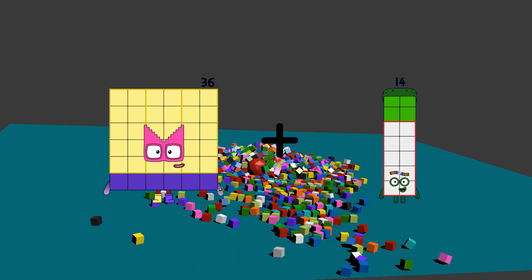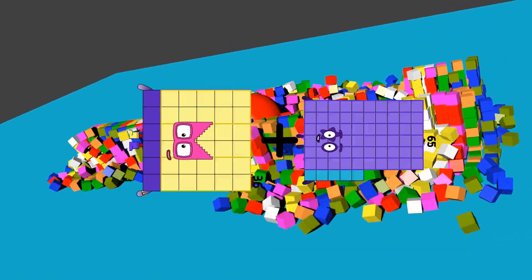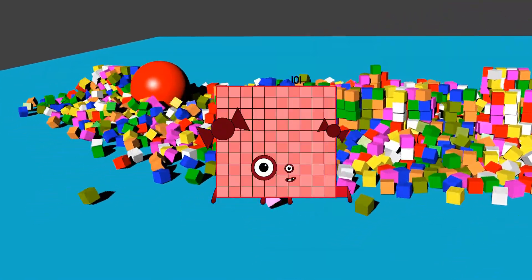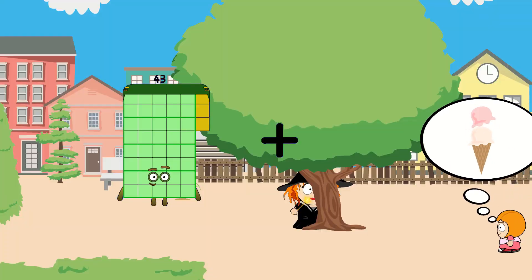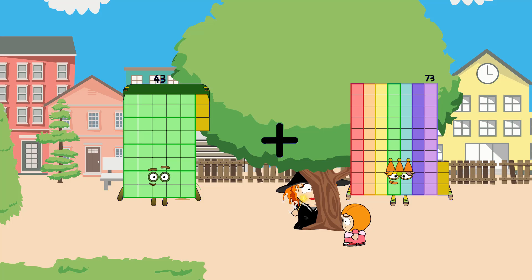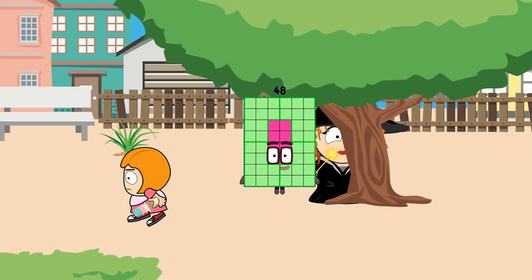36 plus 65 equals 101. 43 plus 5 equals 48.